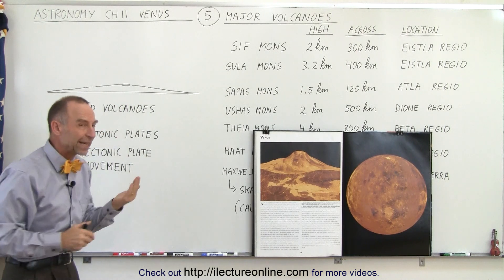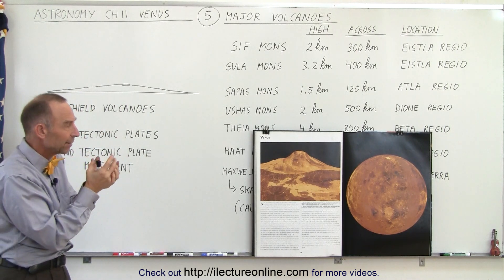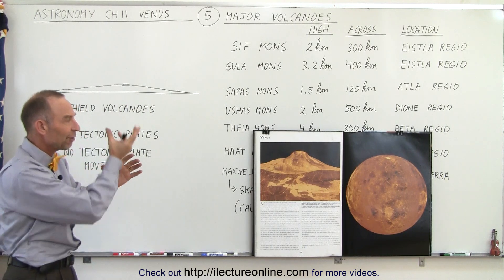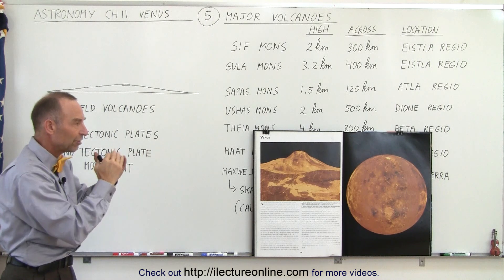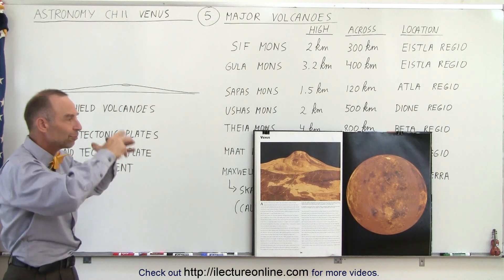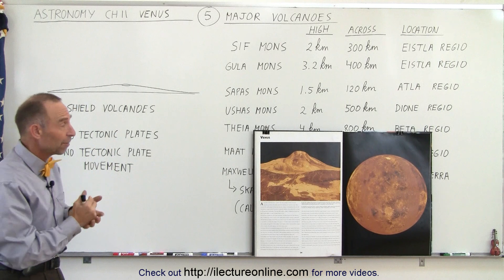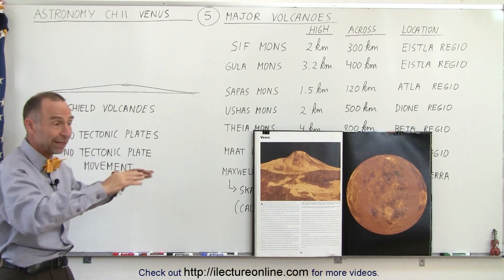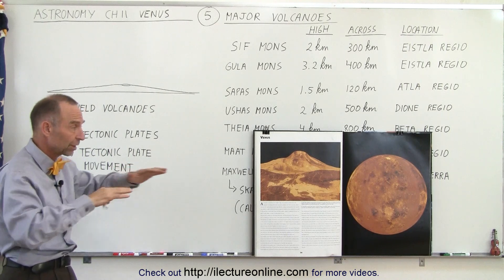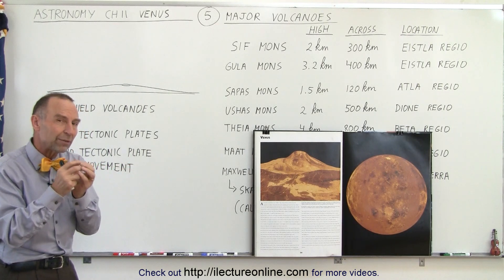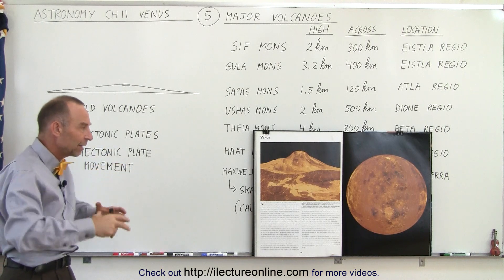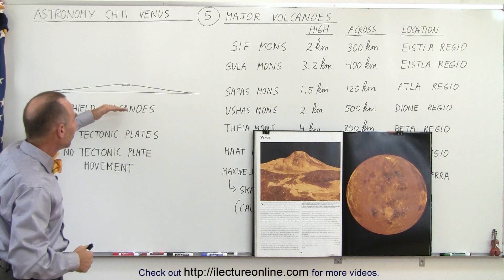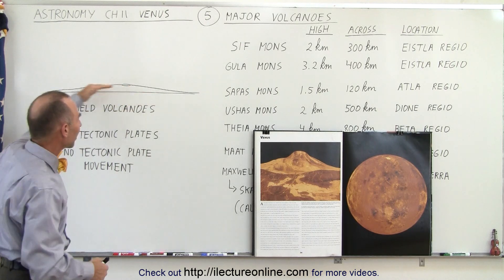So they're called large shield volcanoes. They're created by having a spot where the crust is relatively weak. As lava flows through that weak spot in the crust, it keeps on erupting over time — probably thousands, if not millions of years. Since there's no tectonic plate movement on Venus, those weak portions in the crust remain in the same spot, so they keep on erupting in the same location over and over again, building up the size of the mountain to enormous sizes.